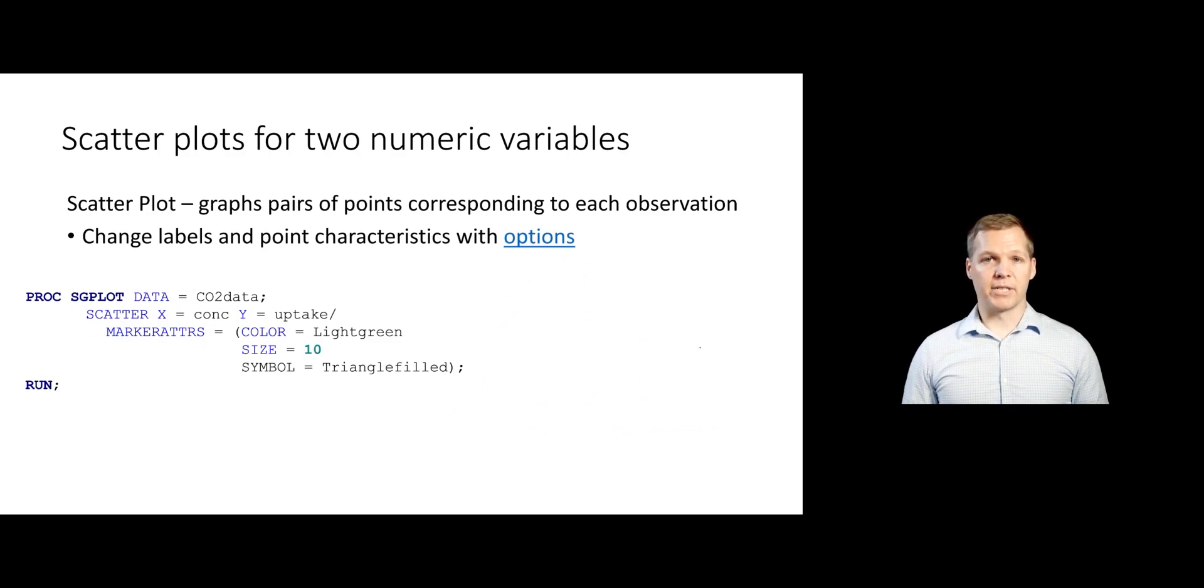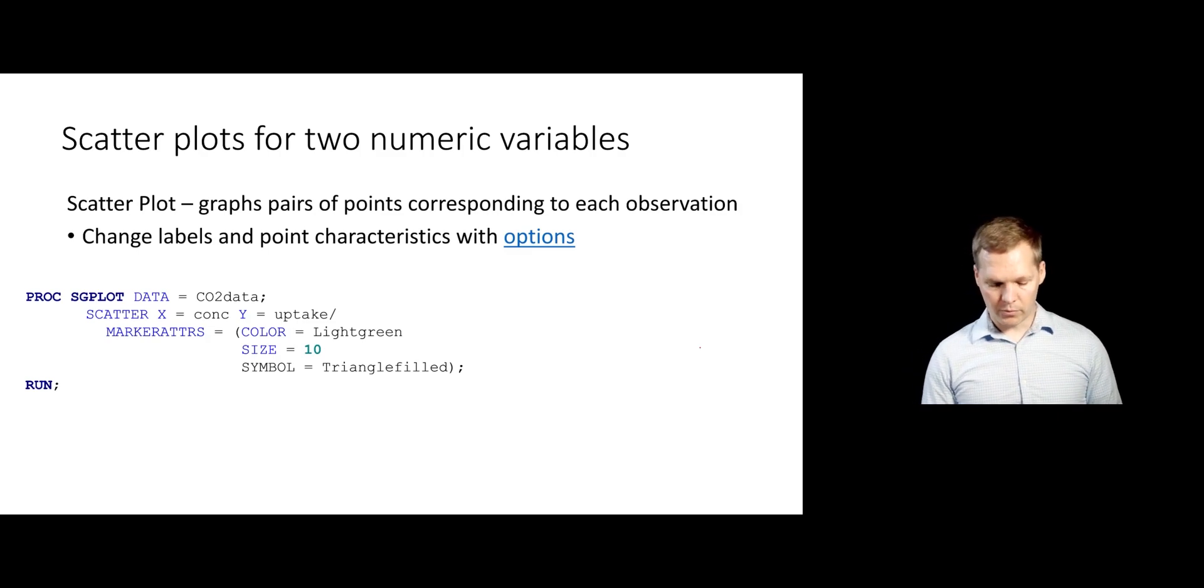There are lots of different customizations that you can do on these graphs, of course. And since we have markers for our different points, you can change the marker attributes using marker ATTRS. Just like before, we're going to put an equal sign and then a parentheses and put our different options within there. And so we can change lots of things like the color of the points, the size of the points and the symbol used.